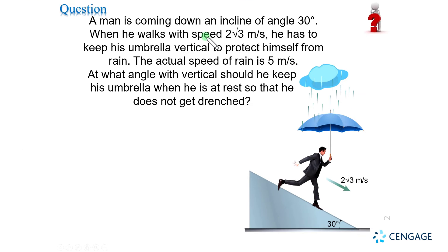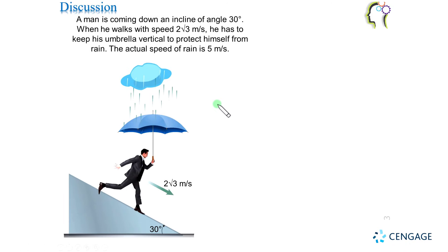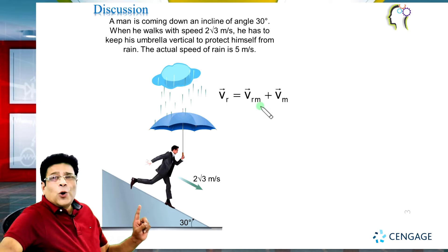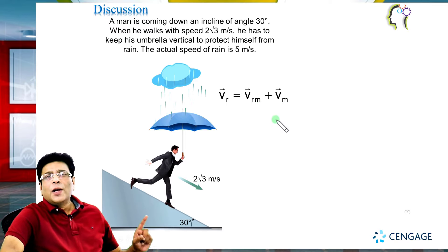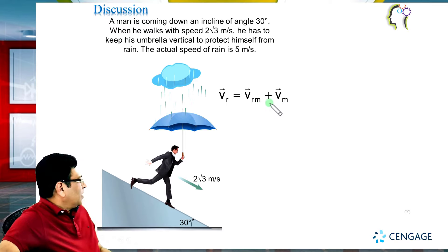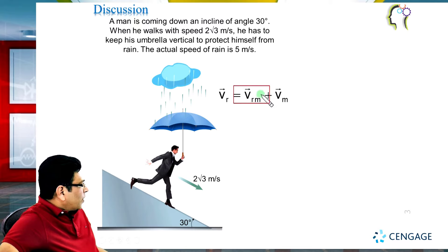So I will copy the diagram and this question here. We can write the vector equation relating the velocity of rain, velocity of rain with respect to the man, and velocity of the man: velocity of rain equals velocity of rain with respect to man plus velocity of the man. This vector equation relates three vectors, meaning we can draw the vector triangle corresponding to this equation. We know that the velocity of rain with respect to man in this situation is vertical.